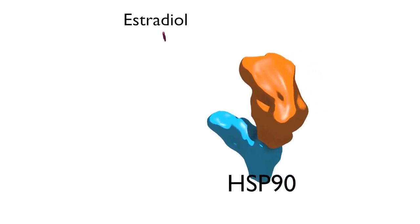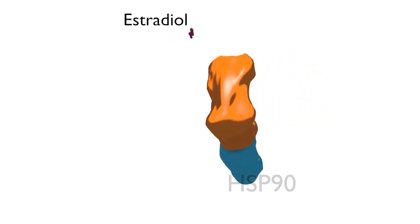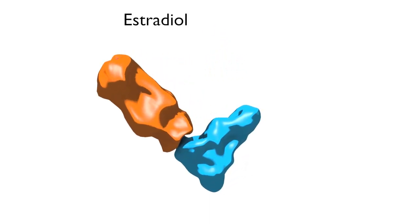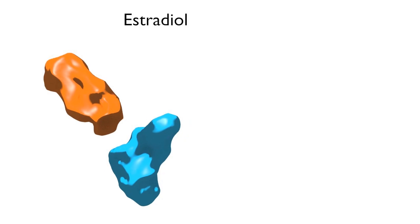When a hormone such as estradiol is present in the cell, it binds to the ligand binding domain of the nuclear receptor, inducing a conformational change. This change causes Hsp90 to dissociate.